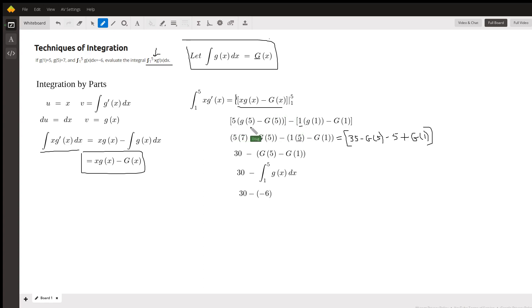Here's the 5 put in for x, minus the 1 put in for x. Now this g of 5... oh, I got the parentheses in the wrong spot here. They should have been here.